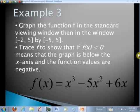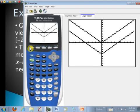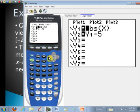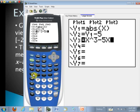So let's go ahead and put that in first. And I'll just go ahead and turn these two functions off by highlighting over top of the equal sign and pressing enter. Now we'll go ahead and put in our function now, x cubed minus 5x squared plus 6x. There we go. And we'll go ahead and hit the zoom key and option 6 to graph in the standard viewing window.